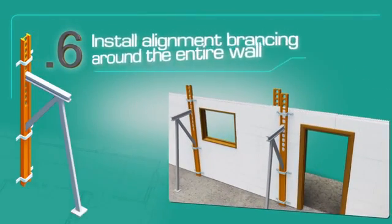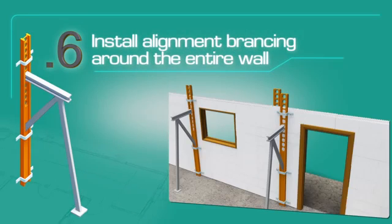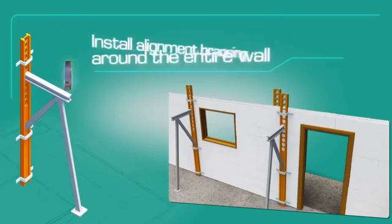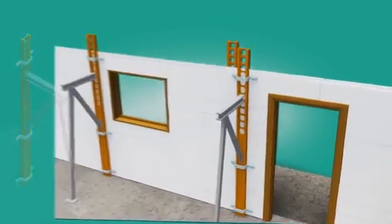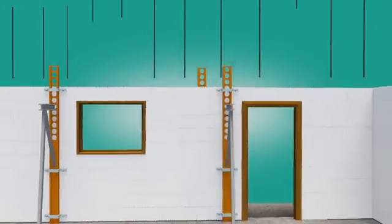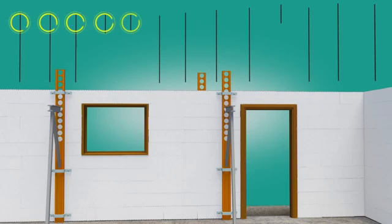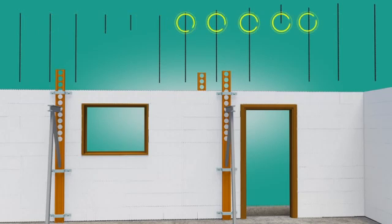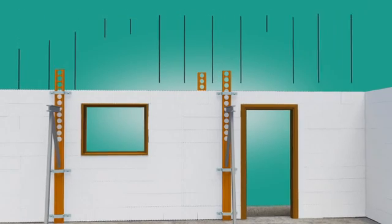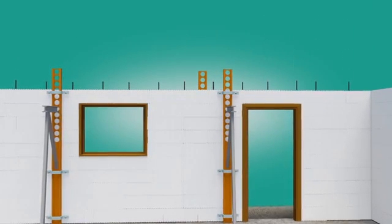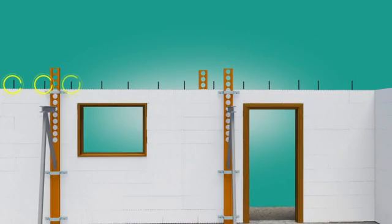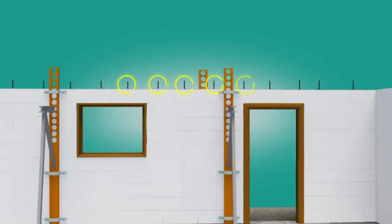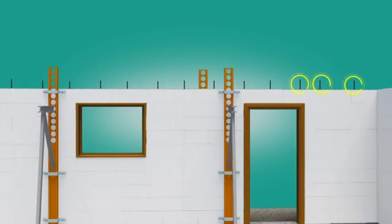Install alignment bracing around the entire wall of the structure to ensure that the walls are straight and plumb and to enable alignment adjustment before and during the pour. The bracing also provides a secure framework to support scaffolding planks once five courses have been stacked. Stack the block to the full wall height for single-story construction or just above floor height for multi-story construction.